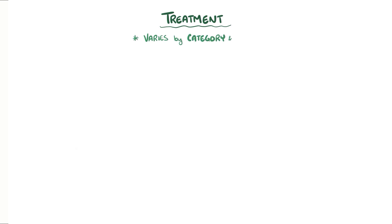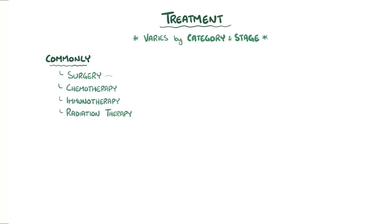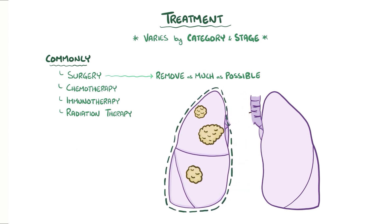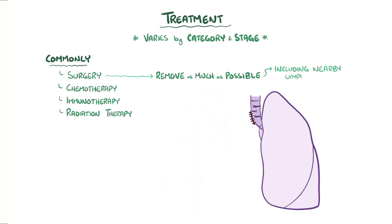Even though treatment will vary by category and stage of the lung cancer, common treatments include surgery if appropriate, chemotherapy or immunotherapy, and radiation therapy when possible. The goal of surgery is to remove as much of the tumor — ideally all of it — with a small border of healthy tissue to ensure all cancerous cells are gone. Depending on the size and location of the tumor, a small wedge of tissue might be taken or up to an entire lung, in which case the airway is sutured shut to prevent air from leaking into the body cavity. It's also common to remove nearby lymph nodes to which the tumor might have metastasized. Since pain is a significant chronic symptom of lung cancer, it's often managed through non-pharmacological approaches like yoga and guided imagery, as well as pain medications.